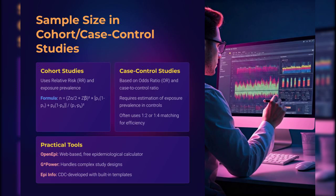Cohort and case-control studies are the bread and butter of epidemiology. For cohort studies, sample size depends on the relative risk and exposure prevalence — the formula is robust but requires thoughtful inputs. For case-control studies, we calculate based on odds ratios and the proportion of controls exposed. Matching ratios like 1:2 or 1:4 can improve efficiency. These calculations usually require software, but they're essential in designing cost-effective and statistically sound observational research.